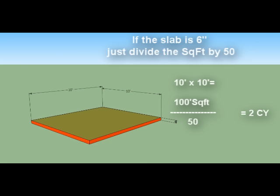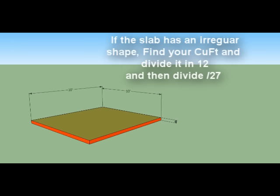As a tip: if you're going to be pumping the concrete, always add one extra cubic yard if you have about 50 feet of pump line. If the concrete slab is an irregular shape or you have footings, you take your cubic feet, divide by 12, and then divide by 27. I'll make another video about that.